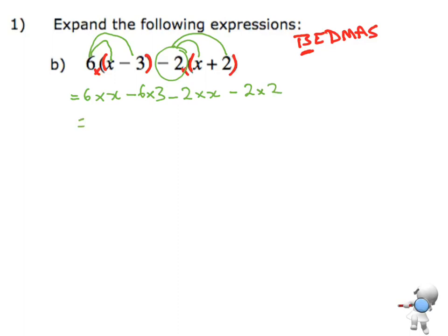Now if I simplify that, 6 times x gives me 6x, minus 6 times 3 is 18, 2 times x is 2x, and 2 times 2 is minus 4.